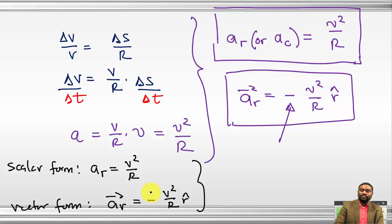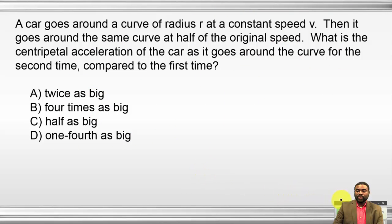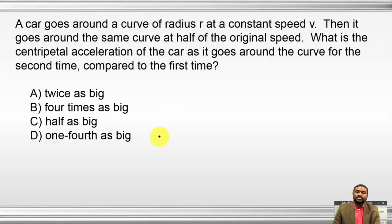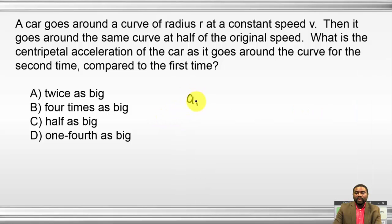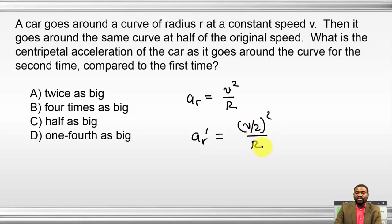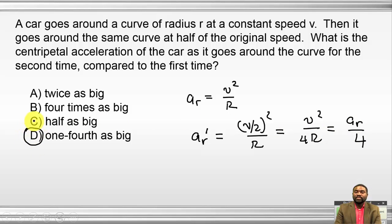100% of the class chose D. We know AR = V²/R. For AR′ with speed V/2 and radius R: AR′ = (V/2)²/R = V²/(4R) = AR/4. So the answer is one-fourth as much.